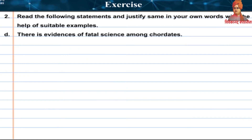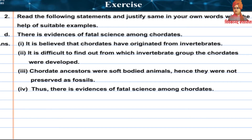Statement D: There is evidence of missing links among chordates. Answer: It is believed that chordates have originated from invertebrates. It is difficult to find out from which invertebrate group the chordates were developed. Chordate ancestors were soft-bodied animals — hence they were not preserved as fossils. Thus, there is evidence of missing links among chordates.